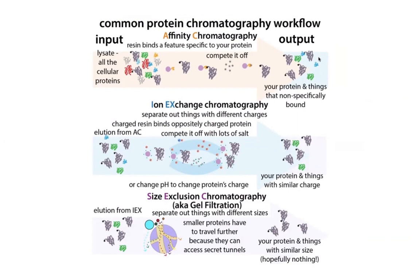Not all those proteins are going to have His-tags — yes, they might have some histidines, but not like six or eight of them in a row. If we use a low amount of imidazole in our buffers, we're preventing that nonspecific binding, and we keep our protein stuck on until we add a lot of imidazole and then push it off. So now we've used that specific feature, and if we continue purifying we can turn to other features about the protein like its charge and its size.